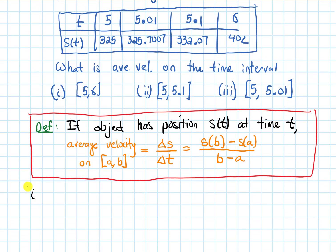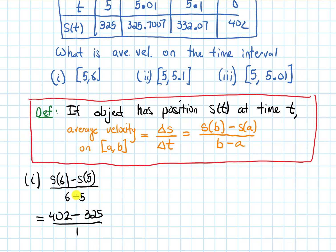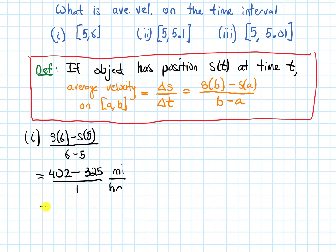So for part one of this example, I want the average velocity on the interval from five to six. So I need S(6) minus S(5), that's my change in position, over the change in time, which is going to be six minus five. And using my table, I see S(6) is 402 and S(5) is 325. The denominator is one. And there's units for everything here. The units of time on this problem were hours and the units of position on the numerator were miles. So simplifying this, we get 77 miles an hour.